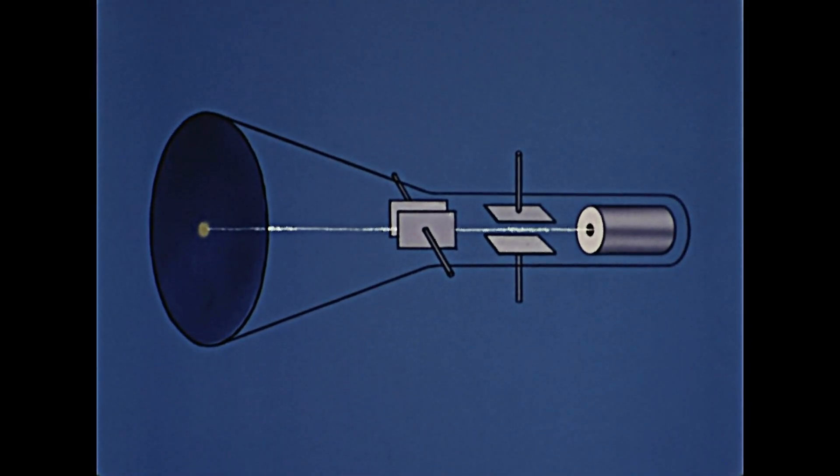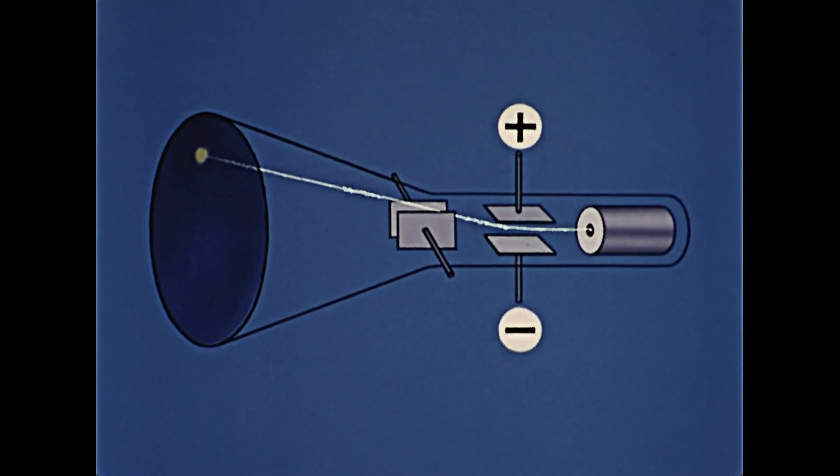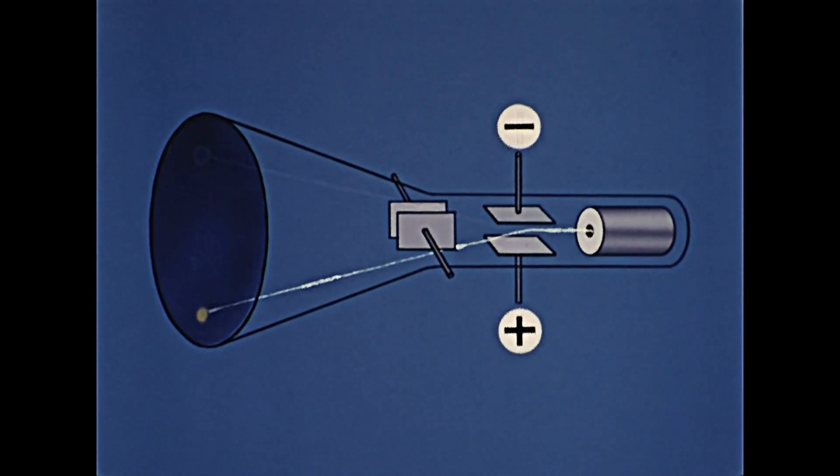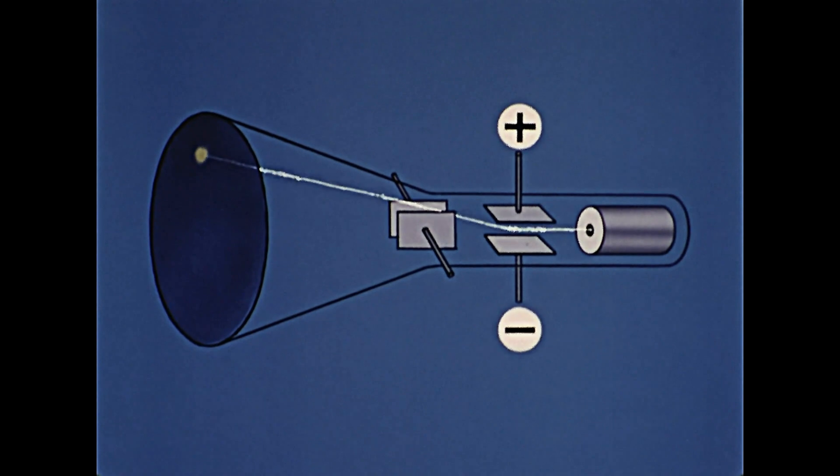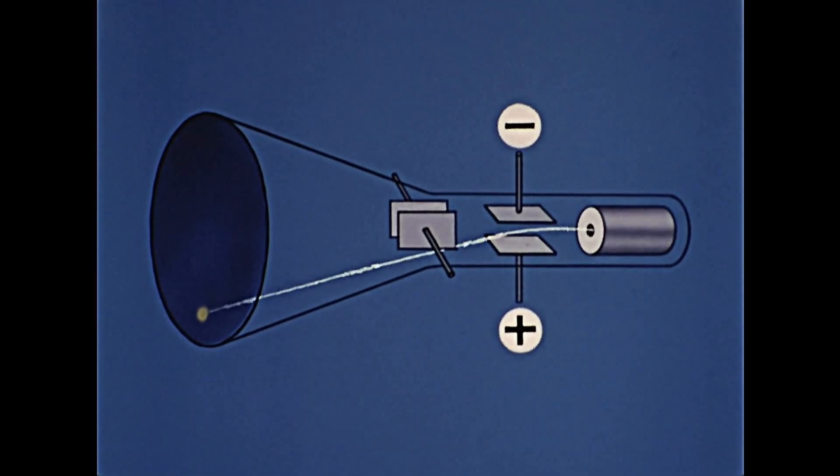We have learned that the electrons can be deflected by an electric field. Therefore, by charging the plates plus and minus, the beam is deflected. The voltage applied to these plates determines the direction and amount of deflection.